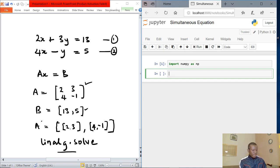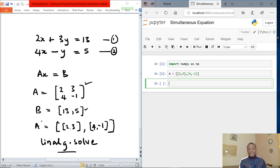Then specify A is equal to, as you mentioned, this array of arrays. So we have [2, 3], and we have [4, minus 1]. And then go ahead and click on run as well, so that assigns this array to A.